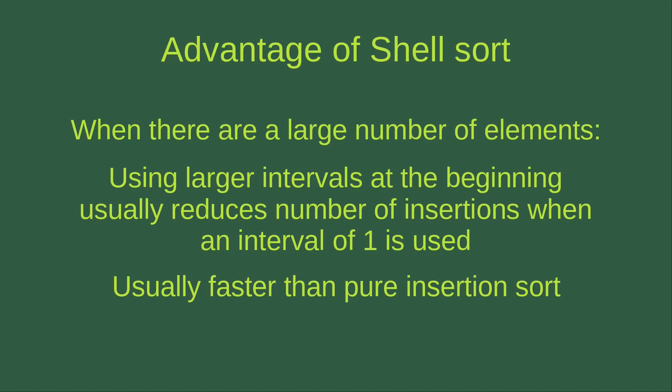So what is the advantage of using shell sort when we can simply use insertion sort? The advantage is that when there are a large number of elements — tens or hundreds — using larger intervals at the beginning usually reduces the number of insertions needed when we get to the interval-of-one insertion sort. This makes shell sort usually faster than pure insertion sort that uses only an interval of one from the start.